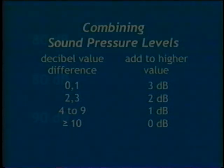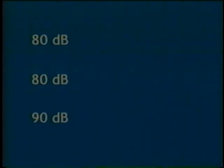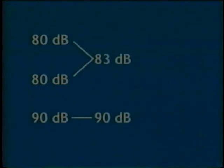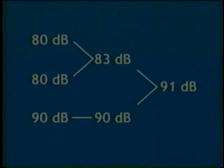Here's an example combining three sound pressure levels. The typical procedure is to combine the smallest values first, then work your way up. We start by combining the 80 dB levels. Their difference is 0, so we add 3 dB to 80 dB to get 83 dB. Then the difference of 83 dB and 90 dB is 7, so we add 1 dB to 90 dB for a grand total of 91 dB.